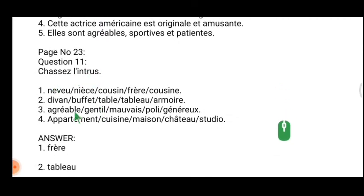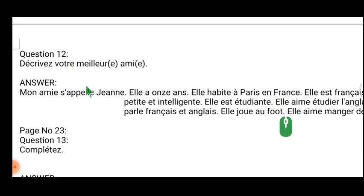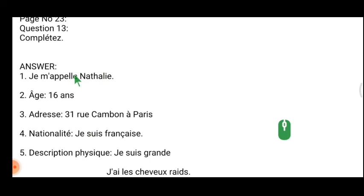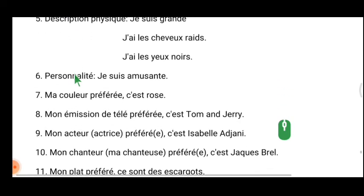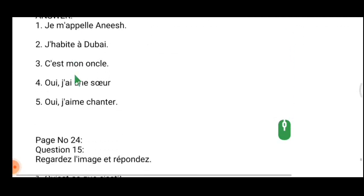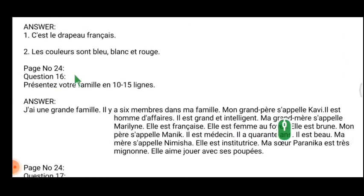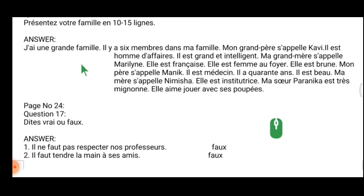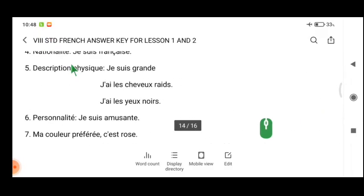Exercise number 11 — find the odd one out — will not be asked. The description exercise will be asked in the quarterly, not now. Exercise number 13 is like an application — you can practice but it will not be asked for the midterm. Exercises 14 and 15 are omitted. Exercise 16 is a French passage and we will discuss it for the quarterly exam — not needed for 50 marks. Exercise 17 is a general question and will also not be asked.